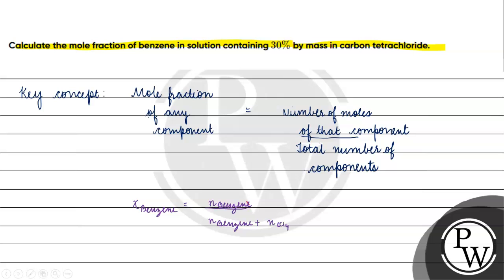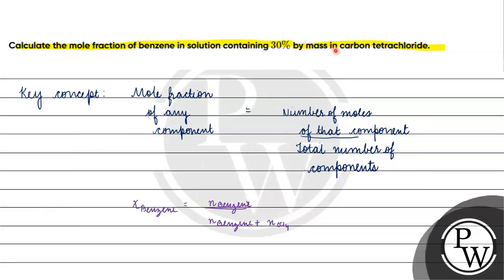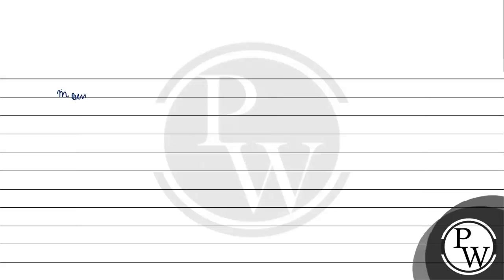Now, let's talk about this question. We are told that 30% by mass is benzene and the rest is carbon tetrachloride. So, if the total mass of solution is 100 grams, the mass of benzene will be 30 grams.